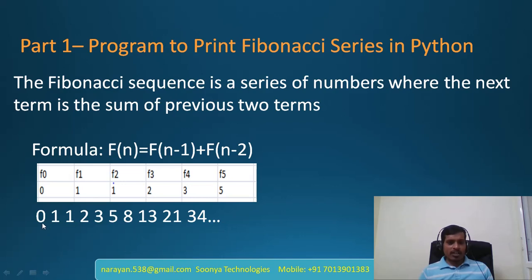Fibonacci sequence starts with 0 and 1. 0 plus 1 will give the next term as 1. 1 plus 1 will give 2. Then 1 plus 2 will give 3. 2 plus 3 gives 5, and so on.